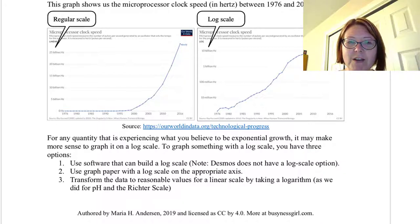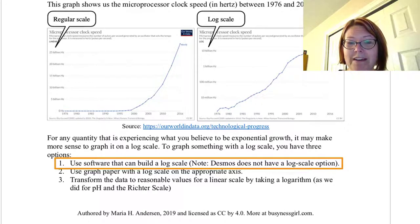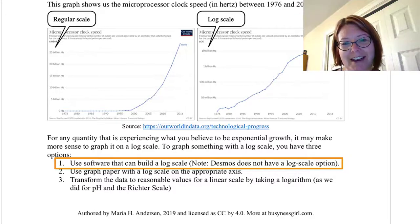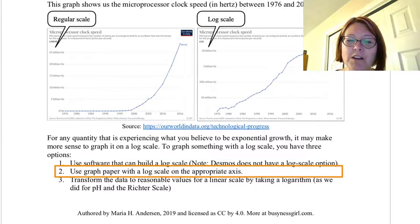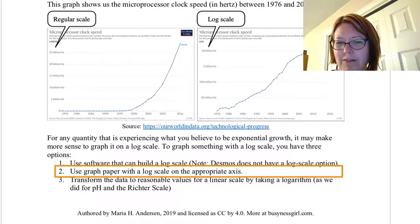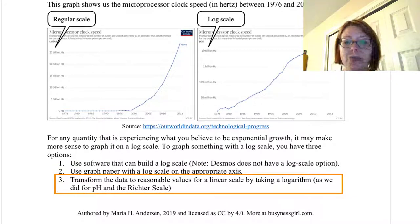Now, for any quantity that's experiencing what you believe to be exponential growth, it may make more sense to graph it in a log scale, so you can see the growth a little bit better. To graph with a log scale, you have three options. The first option is to use software that can build a log scale, and in this case, Desmos does not have a log scale option. So that's out of the question. We can also use graph paper that has a log scale on the appropriate axis. There is log-linear graph paper, there's log-log graph paper, and of course there's linear graph paper, which is just your normal graph paper. The third option you have is to just transform the data to reasonable values for a linear scale, and we do that by taking a logarithm, and that's exactly what the pH scale and the Richter scale do. They take the log of hydrogen concentration to make it a more reasonable scale, and it takes the log of the amplitude of the Earth's motion in microns to make it a more reasonable scale for us to talk about.